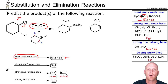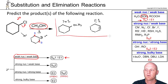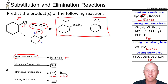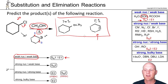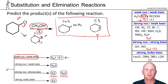It would be hard to distinguish a major versus minor product here. Maybe with heat shown under the arrow, if it's hot enough, we'd get more E1 than SN1, since it's more entropically favored at high temperatures. But it's really hard to distinguish between the two, so we won't label major and minor in this case. Those are your SN1 and E1 products.